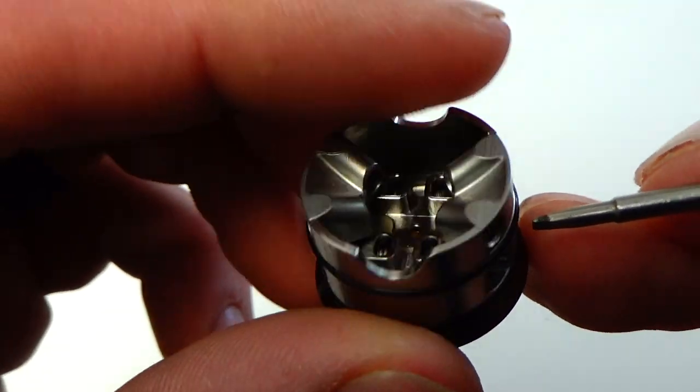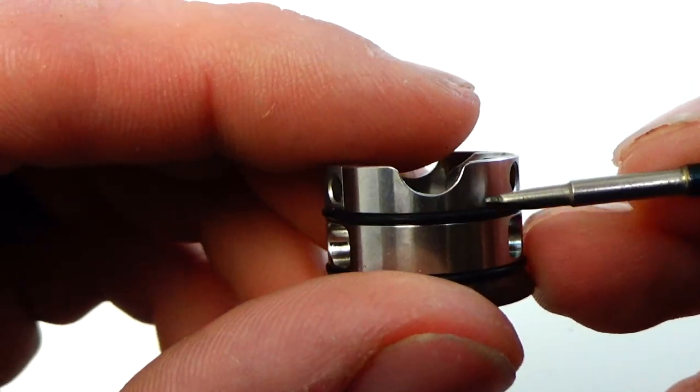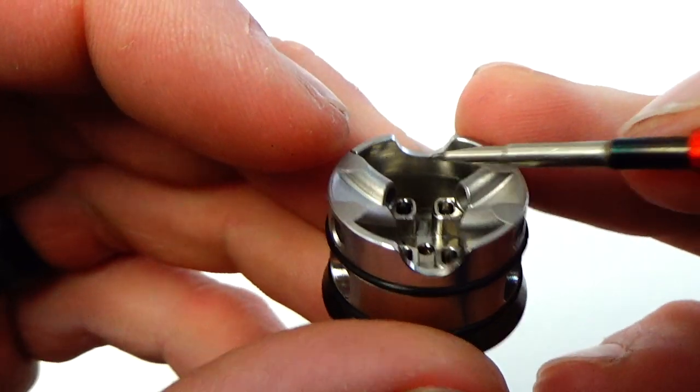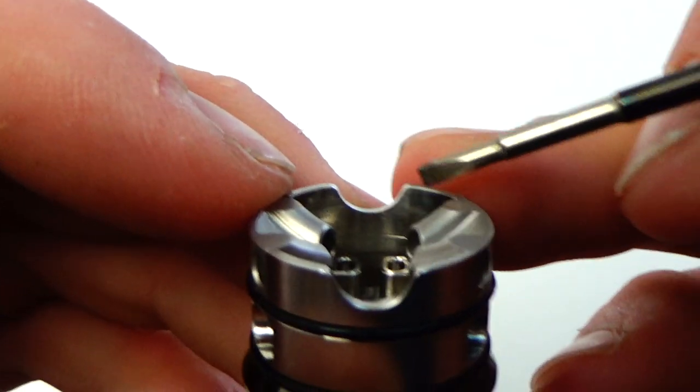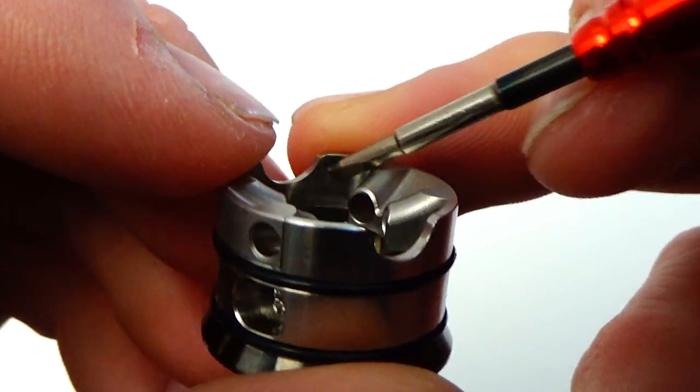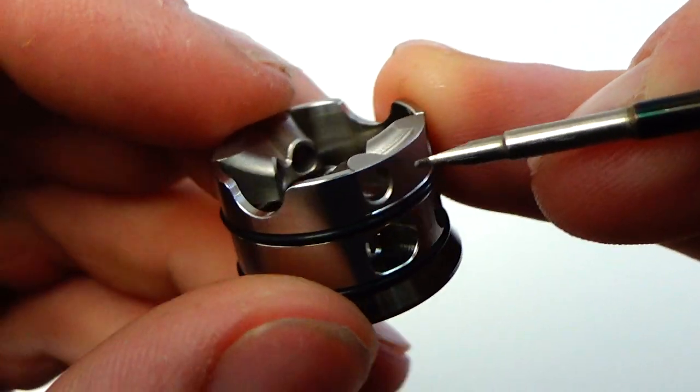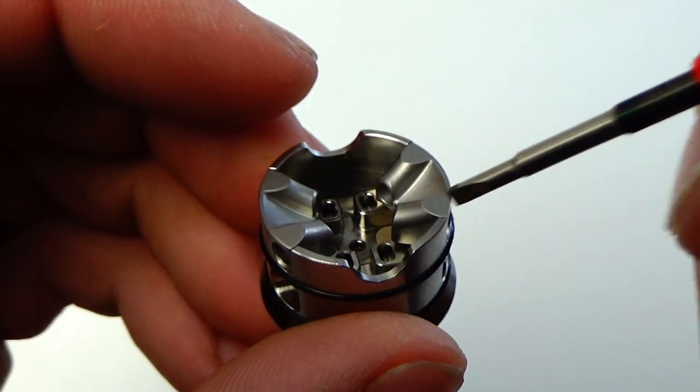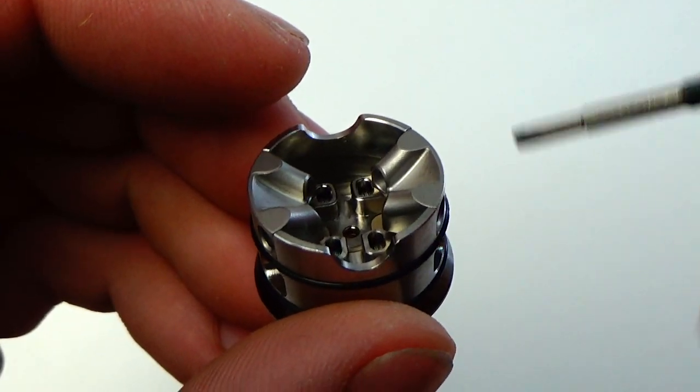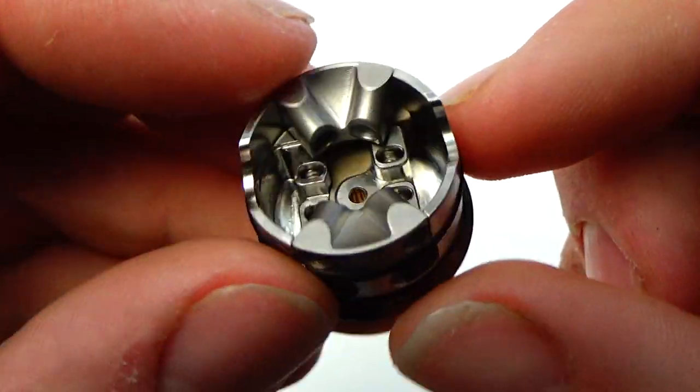And obviously it's ideal for squonking. Because you could squonk all the way up to kind of, let's see if I can show you. See that line. You could squonk all the way up to that line before it's going to start going up to your airflow channels. And even if it does, it's got to go up at an angle for any juice to leak out. So, it's an ideal squonking RTA.